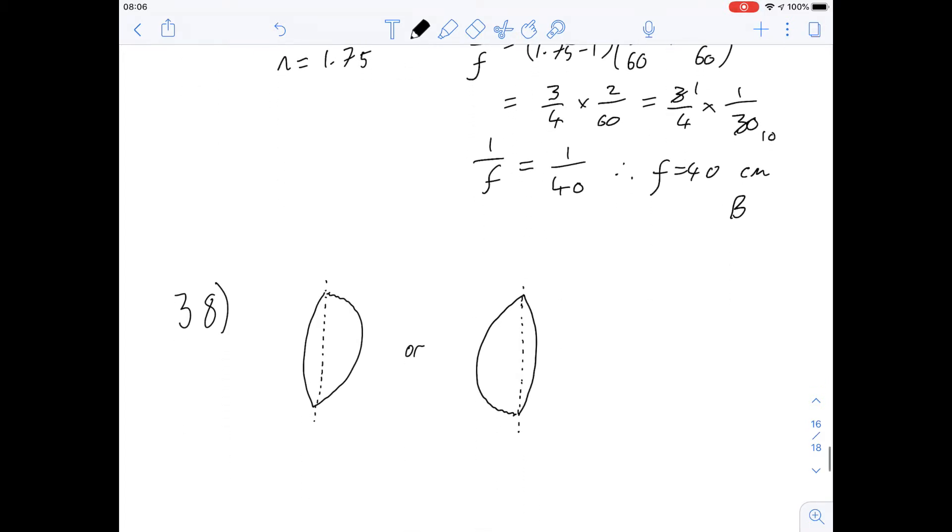So question 38, I've drawn out a diagram here to explain this a little bit better, but basically there's a lens and it's not symmetrical. So one of the curvatures is a little bit different to the other. And so if you had light going through this lens and light going through this lens, would the refraction be any different simply by reversing the lens?